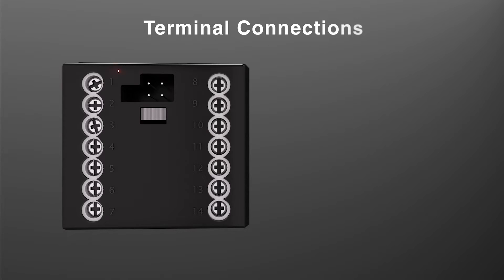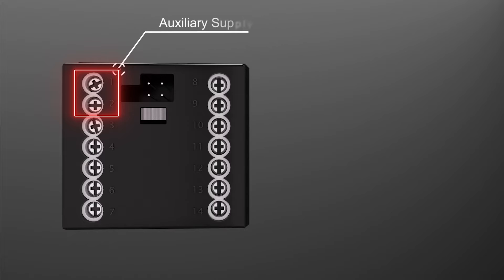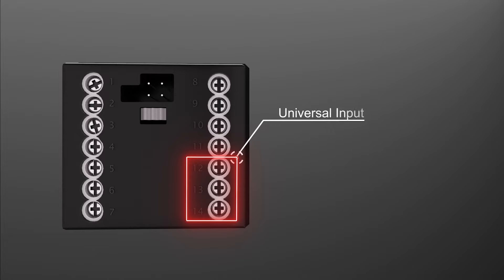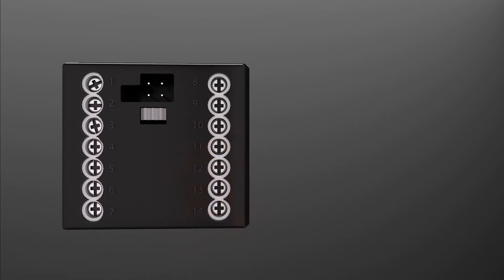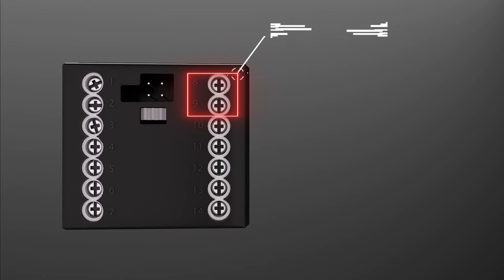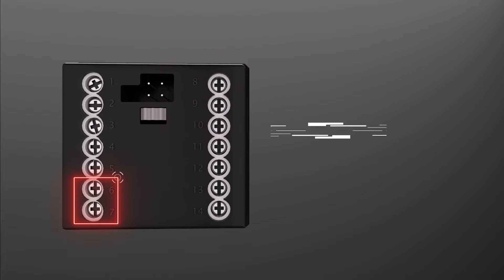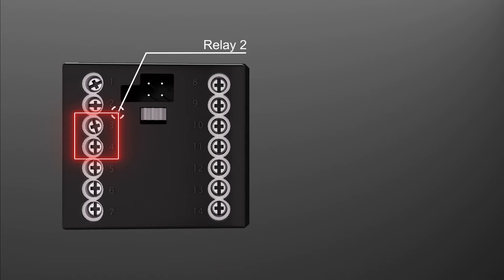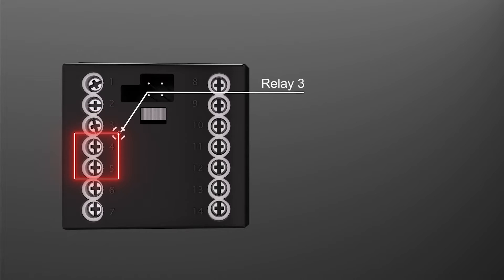Terminal connections: Terminals 1 and 2 for supply voltage. Terminals 14, 13, and 12 for RTD, thermocouple, milliampere, and voltage input. Terminals 10 and 11 for RS-485 Modbus communication. Terminals 8 and 9 for analog current, voltage, or SSR output. Terminals 6 and 7 for relay 1 output. Terminals 3 and 4 for relay 2 output. Terminals 4 and 5 for relay 3 output.